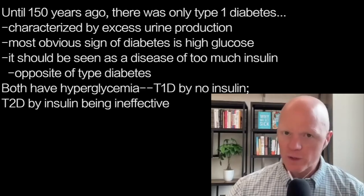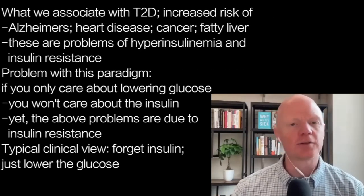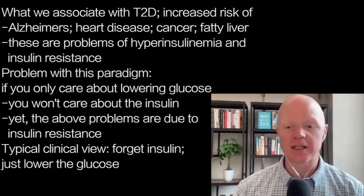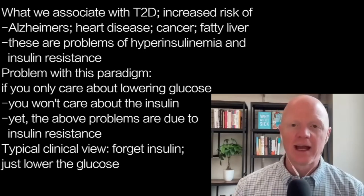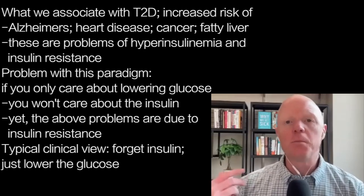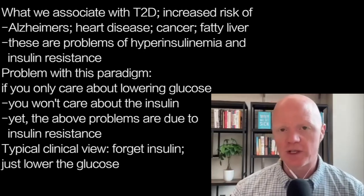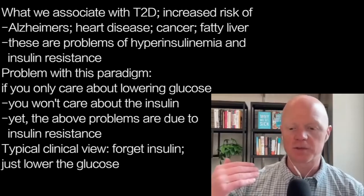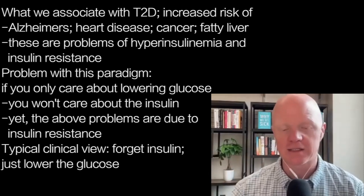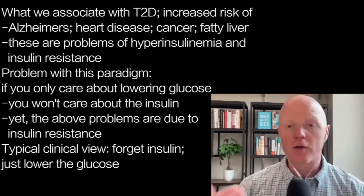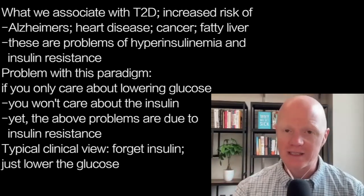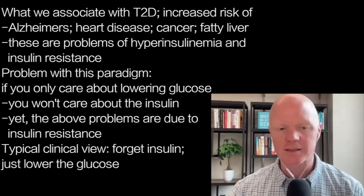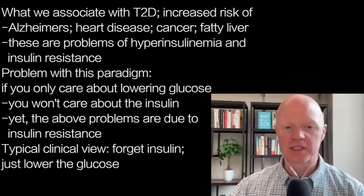With all of that as a framework, I don't want you to think that high glucose isn't a problem. Chronic hyperglycemia is pathogenic — it can harm the body. However, so much of what we associate with type 2 diabetes, namely the increased risk of Alzheimer's disease, cancer, heart disease, and fatty liver disease, those are not problems of the hyperglycemia, but they are problems of the hyperinsulinemia — the high insulin and the associated insulin resistance.